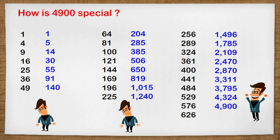And we have found a square. 4,900 is 70 squared. 4,900 is a square number.